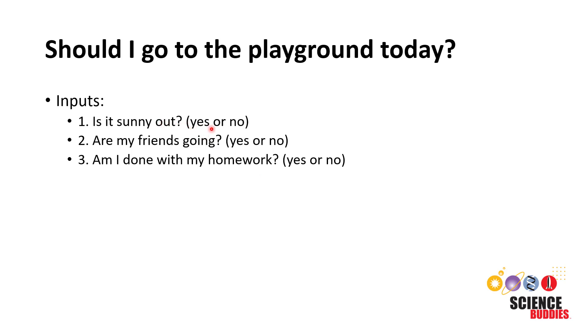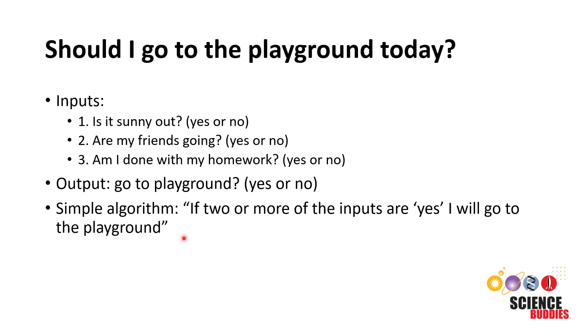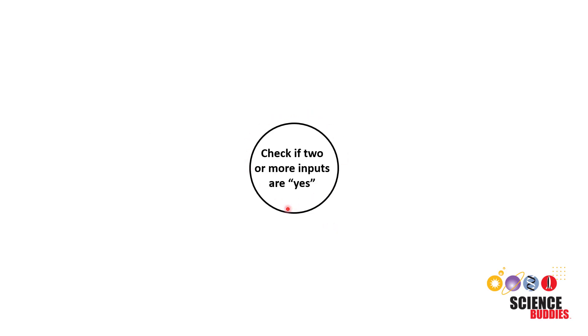All of these inputs could have a yes or no answer. Depending on the answers or states of these inputs, you would then decide on the output—yes or no—whether or not you should go to the playground. And you could represent this decision-making process with an algorithm without needing to use a neural network. For example, you could write a simple algorithm that says if two or more of the inputs are yes, I will go to the playground.